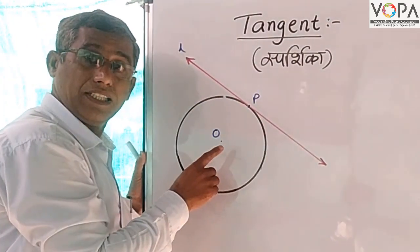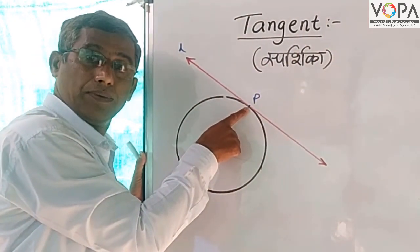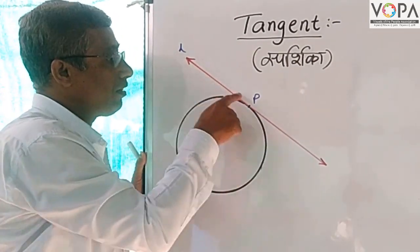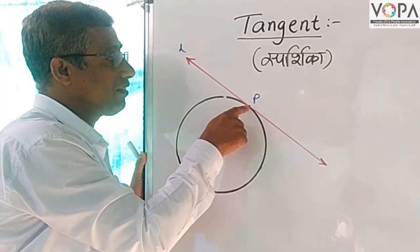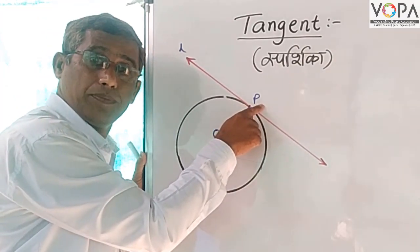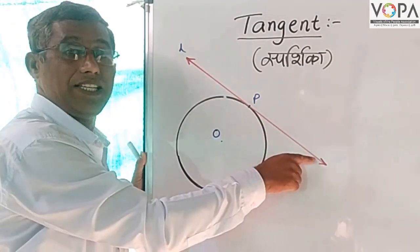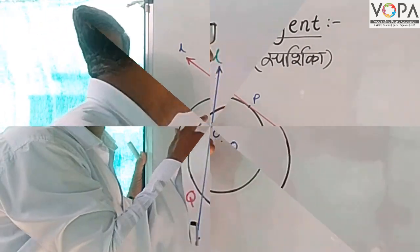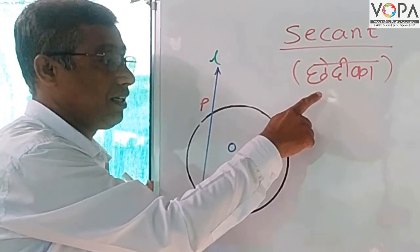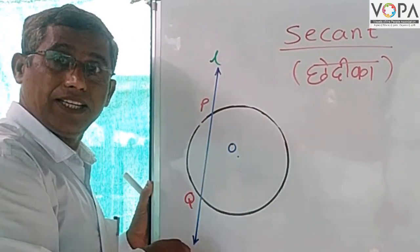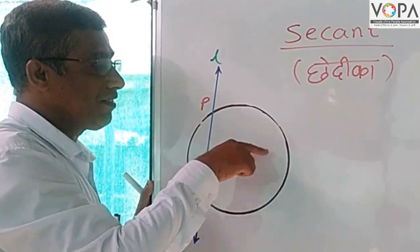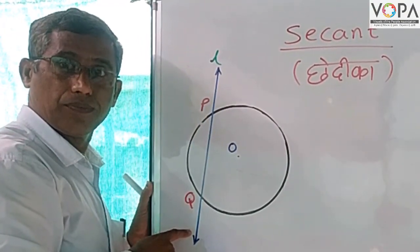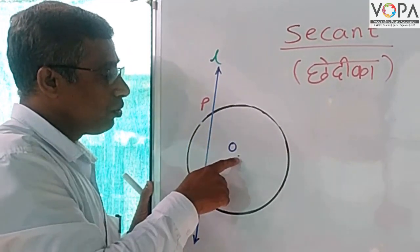A tangent — in Marathi called 'sparshika' — is a line that intersects the circle in exactly one point. For example, with O as the center of the circle, line L intersects the circle at one and only one point P. So we say that line L is a tangent to this circle.